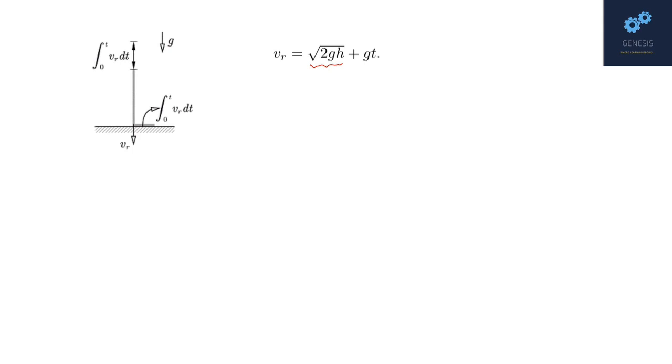Now, the amount of chain that falls through will be integral vr dt. Now, why I am writing it as vr, you will understand. As of now, just understand it to be the magnitude of the velocity. So, whatever amount falls from here slides in here.